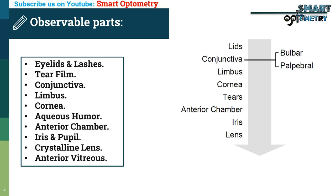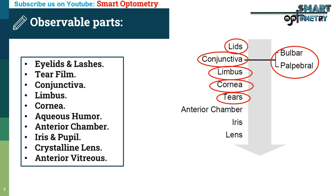Here is a flowchart used while examining the patient's eye. First, we start with the lids, then conjunctiva — both bulbar and palpebral conjunctiva — then limbus, then cornea, then tear film, then anterior chamber, then iris, and then the crystalline lens.